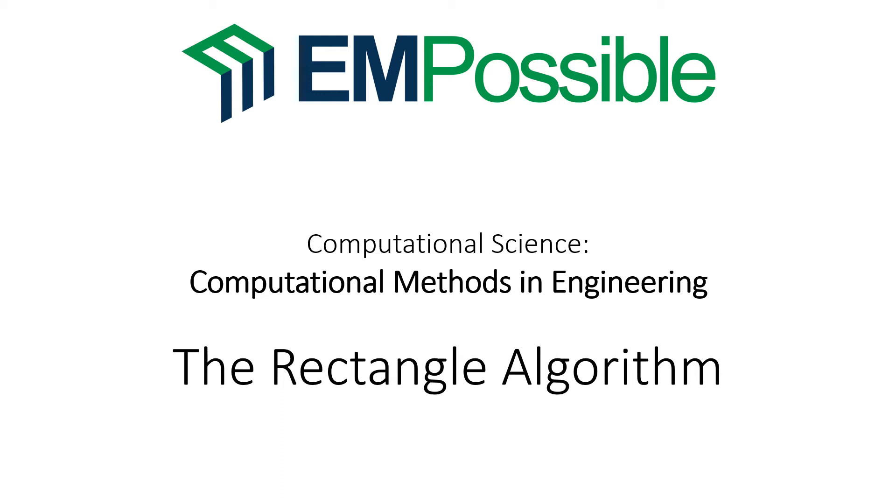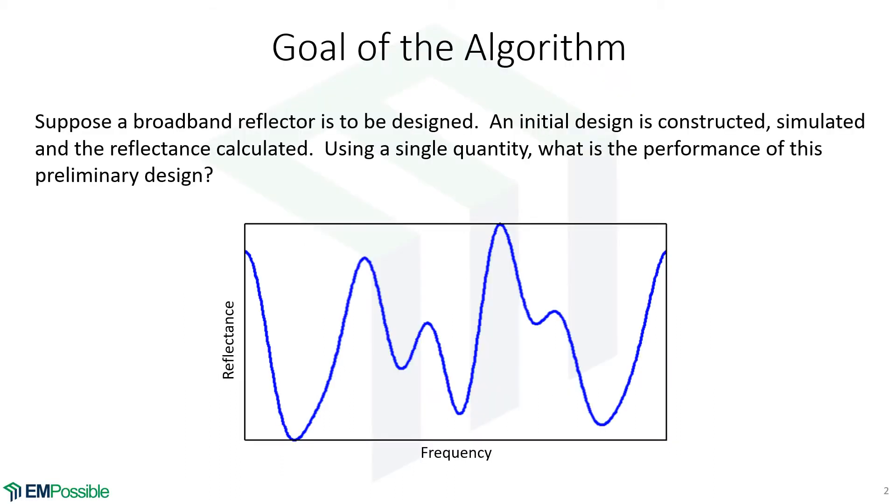The Rectangle Algorithm. Let's set up our objective here by an example. Suppose we would like to optimize some kind of electromagnetic device for broadband reflection. We'll probably start with some kind of initial guess that's terrible. We will simulate it, and we will plot its reflectance as a function of frequency, and we might get something like this. How on earth do we determine how good this works?